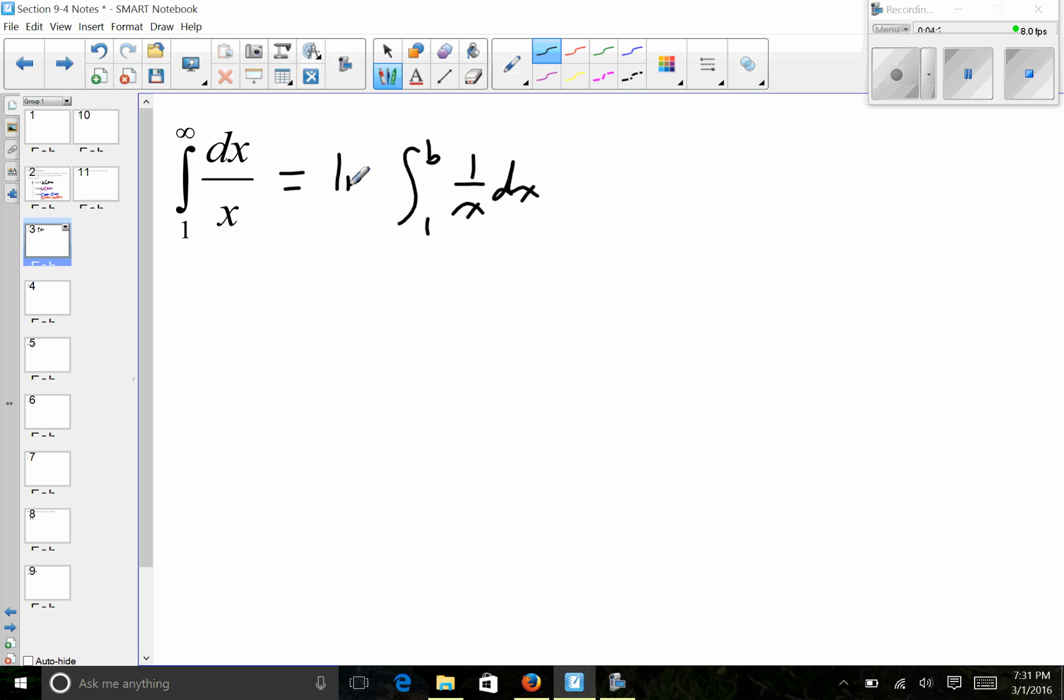And then I'm going to do the limit of this as b approaches infinity. So now antiderivative of one over x - haven't taken the limit yet, so it stays there. Antiderivative of one over x is the natural log of the absolute value of x, and we're going to evaluate that from one to b.